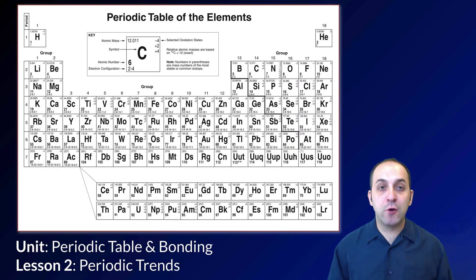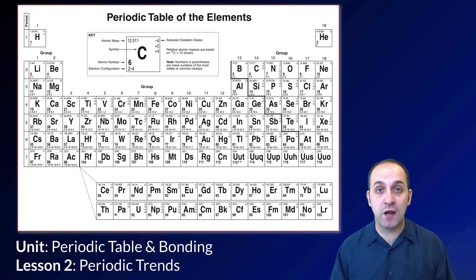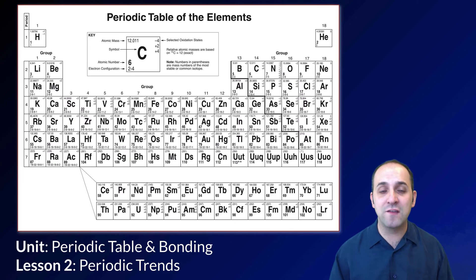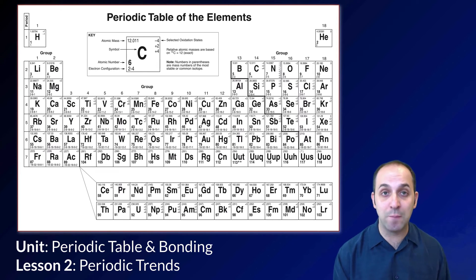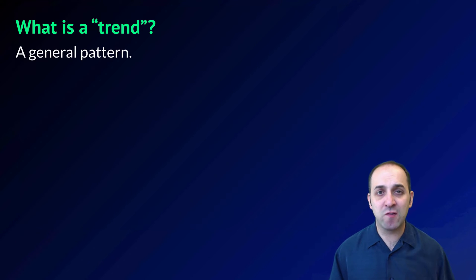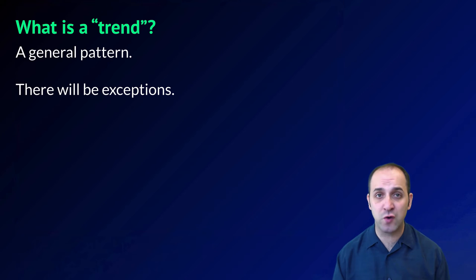Hi and welcome to lesson two of our periodic table and bonding unit. Here we're going to talk about some of the trends that we see when we consider the elements arranged in the periodic table. Our last lesson dealt with an introduction of the periodic table, and you really should check it out if you haven't yet. But here in lesson two we're going to look at some of those trends. A trend is a general pattern, and general is really important because there are going to be some exceptions for each of the trends that we talk about here.